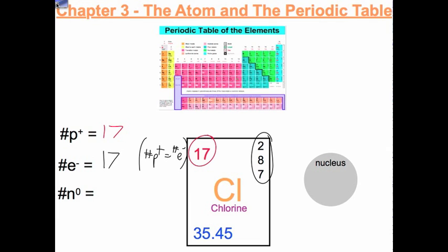To find the number of neutrons, we have to do a little math. We know that this number is the atomic mass, which is the mass of the nucleus, the number of protons plus the number of neutrons. If we rearrange that, we can figure out the number of neutrons. The atomic mass minus the number of protons equals the number of neutrons. But you can't have 0.45 neutrons or protons. So we're going to round that number to the closest integer. We're going to round it to 35. Remember, it's an average. There are 17 protons, so 35 minus 17 is 18 neutrons in the nucleus.